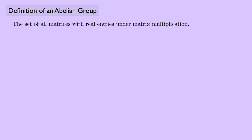Let's consider the set of all matrices with real entries under matrix multiplication. Is this a group? There's a problem. Consider a 2×2 matrix like [1,2;3,4] and a 3×3 matrix. These are both matrices with real entries, but to multiply them together the inner dimensions would have to match, and they don't — in either order. So we need to place some additional constraints; this won't work with just any matrices.